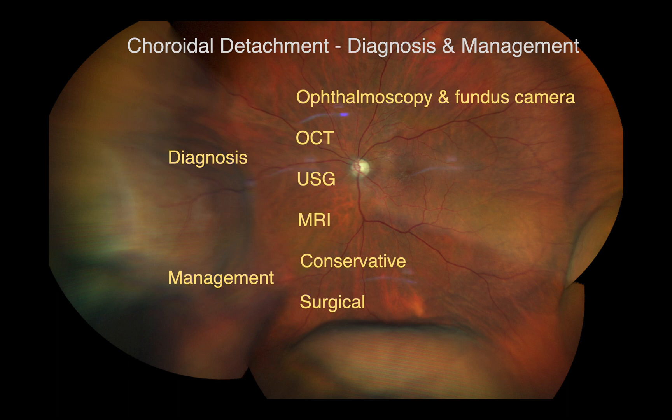Choroidal detachment may be detected clinically through ophthalmoscopy. Patients with small peripheral serous detachment may have no symptoms or may show a small myopic shift. They may also present with angle closure with anterior displacement of the ciliary body and iris. Hypotony maculopathy is also a condition that can be found.